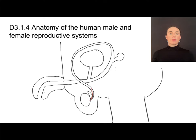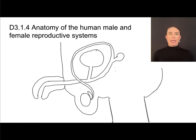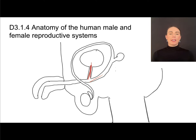If an ejaculation is taking place, sperm and semen travel through the sperm duct and outward. The last major structure to draw is the prostate gland. The prostate gland sits right near the junction of the sperm duct and the tube coming from the urinary bladder, just underneath them.